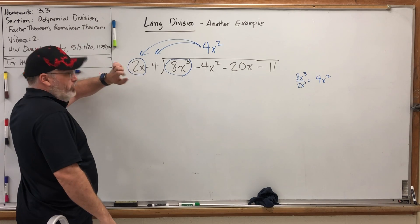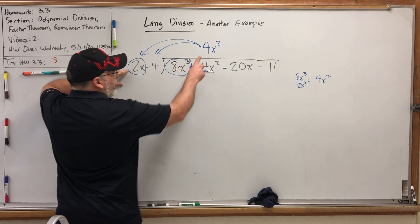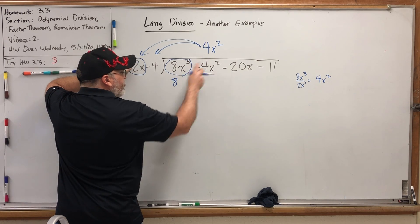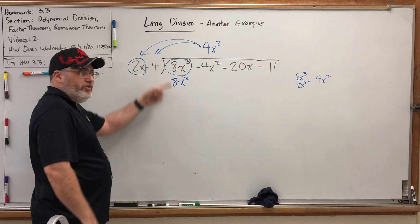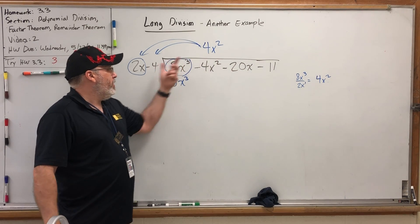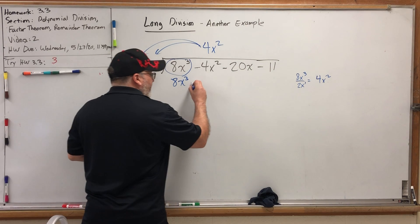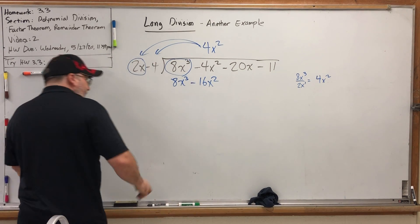4x² times 2x: 4 times 2 is 8, 8x² times x is x³. Of course, that was going to match. It's supposed to. But we're not done. 4x² times -4 is -16x².